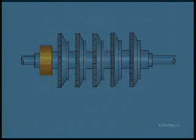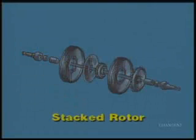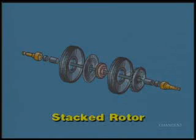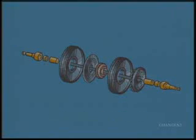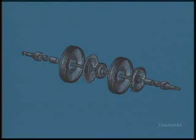Stacked rotors consist of a stub shaft for each end, several impellers, a balancing piston, spool pieces, and other needed parts, all held together with a heavy center bolt. Although this type of rotor is always used in a stacked style vertically split casing, it can also be used in other types of casings as well.